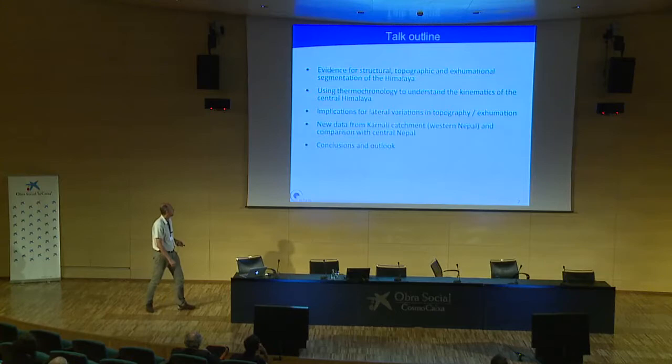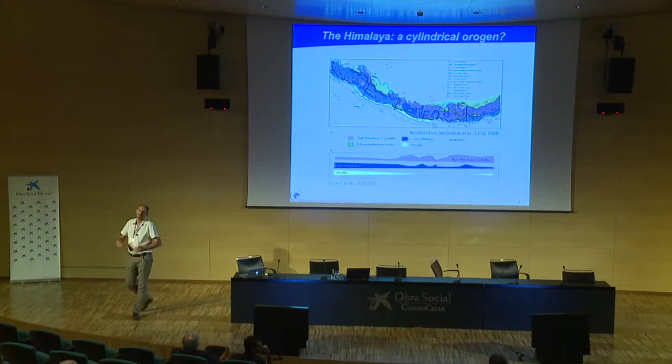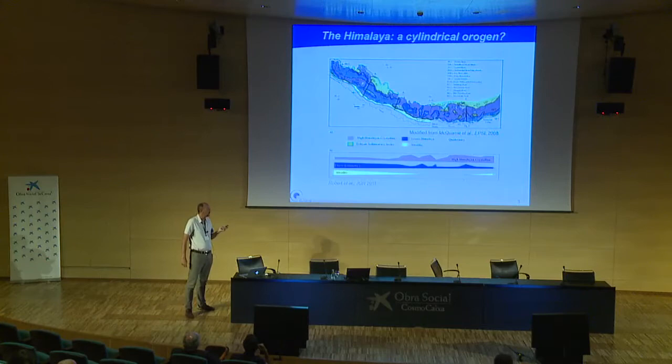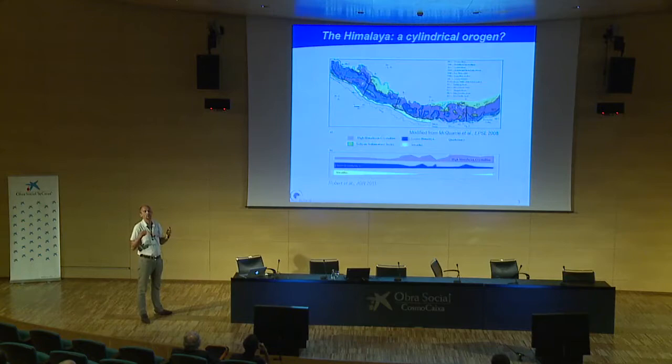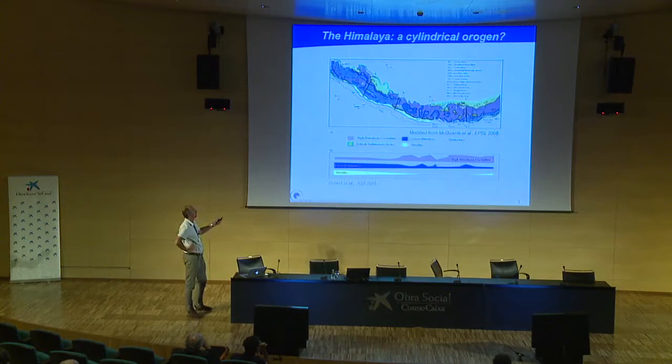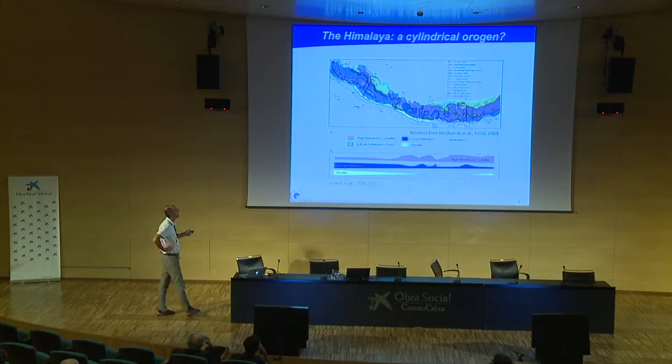The Himalaya is generally described as a 2,500 kilometer long, basically cylindrical orogen. But if we have a closer look at a first-order rather than a zero-order view of the orogen, it turns out it's really not quite as simple as that. This is just a simplified geological map of most of the Himalaya.